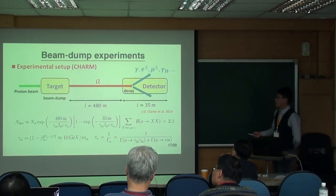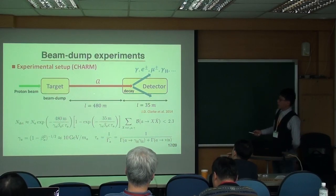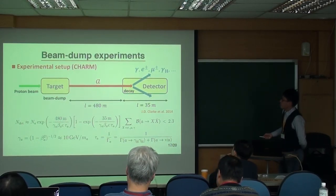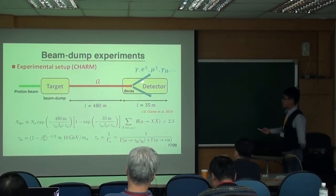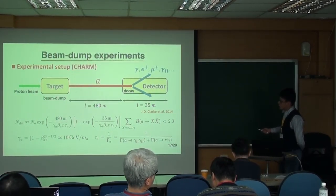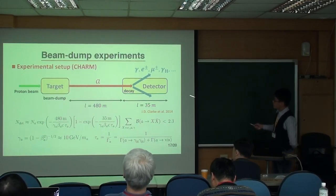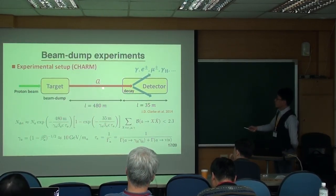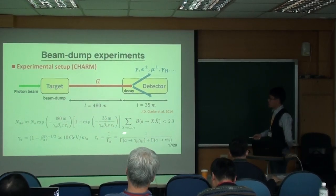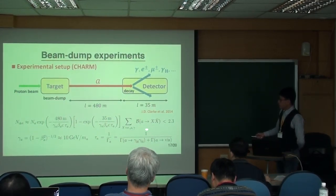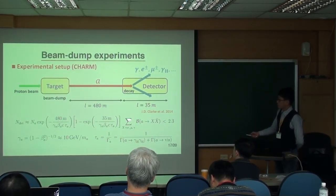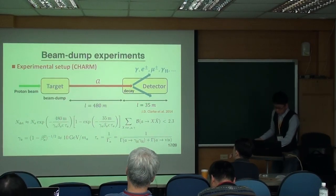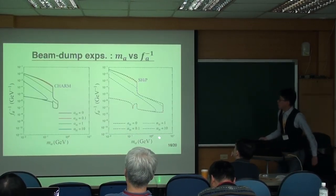And the pion will decay into some hadronic axion. The axion may decay before arriving in the detector or inside the detector or after passing the detector. And because in our model, the axion can decay into a hidden photon, we can calculate the branching ratio of the axion decay into the visible particles and the hidden photon.